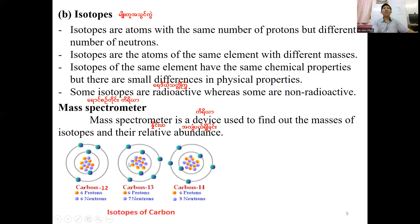This is an example of carbon-3 and carbon-4. The size of carbon-3 is much more than the size of carbon-4. This is the case of physical properties being different in the same element.